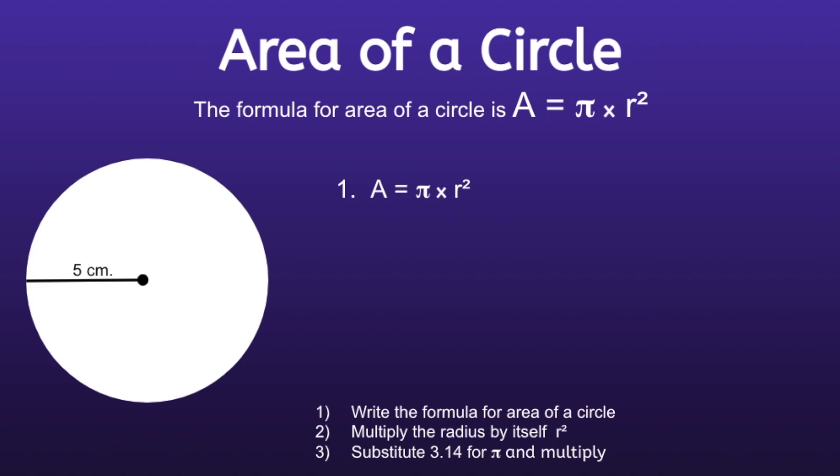Step two is to multiply the radius by itself. This is the r squared in the formula. So if we look at that circle on the left, we can see that the radius is 5 centimeters. Because remember, radius goes halfway across the circle. So if we multiply the radius by itself, 5 times 5 is equal to 25.